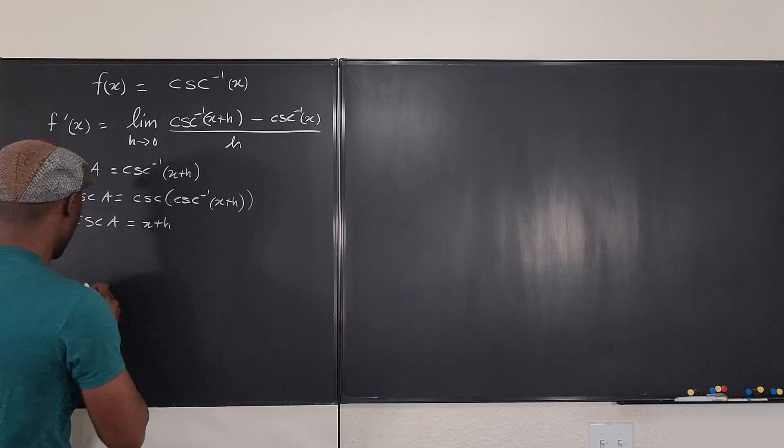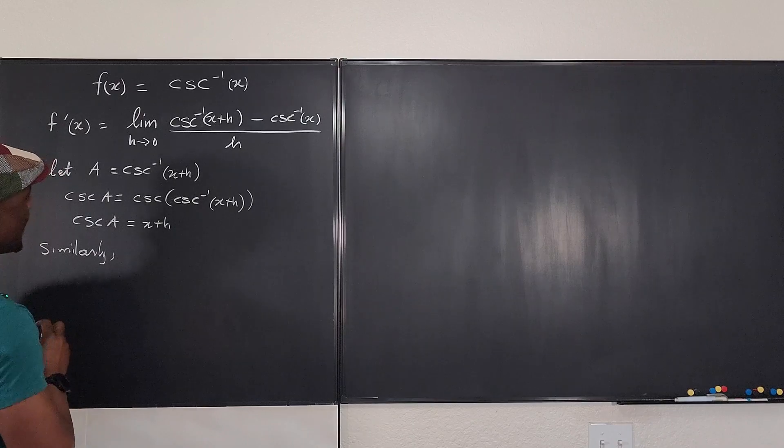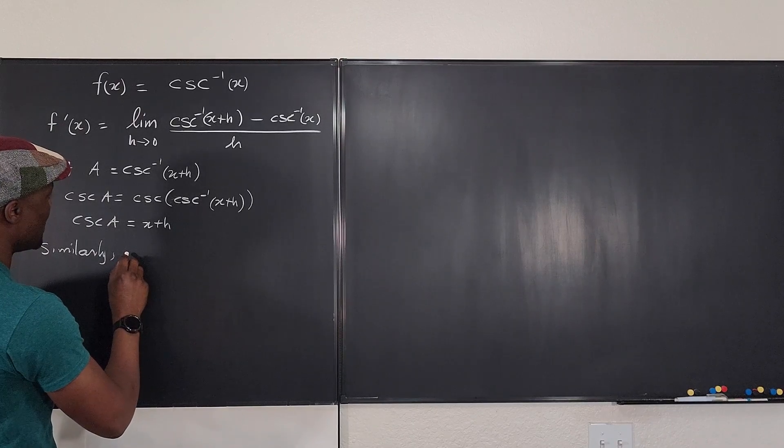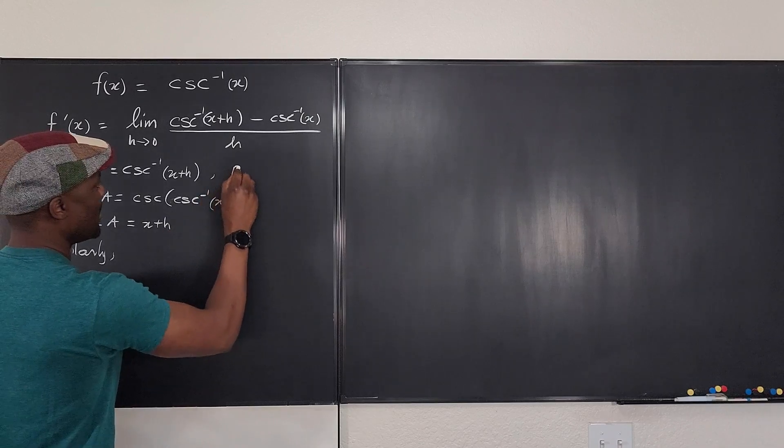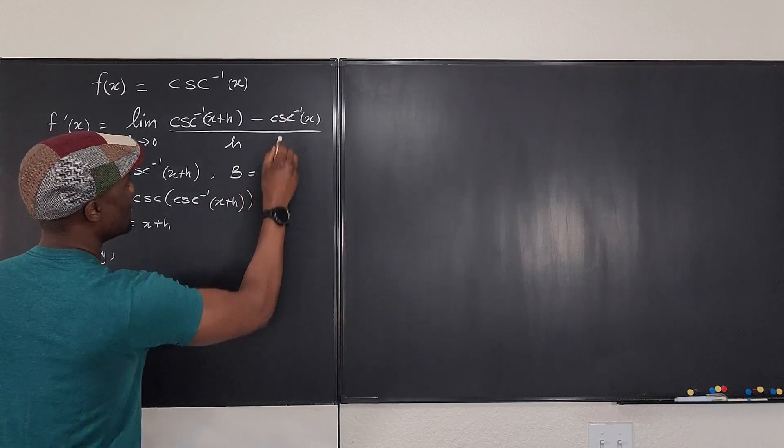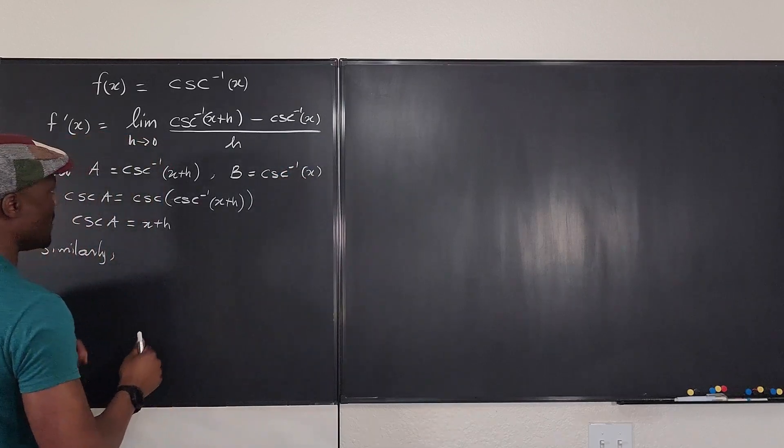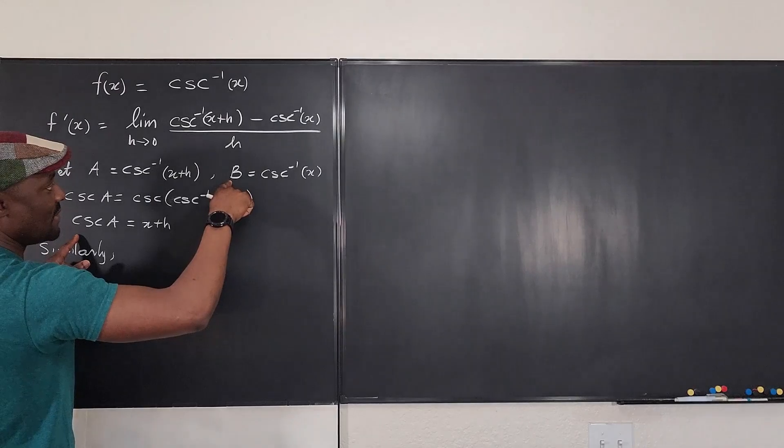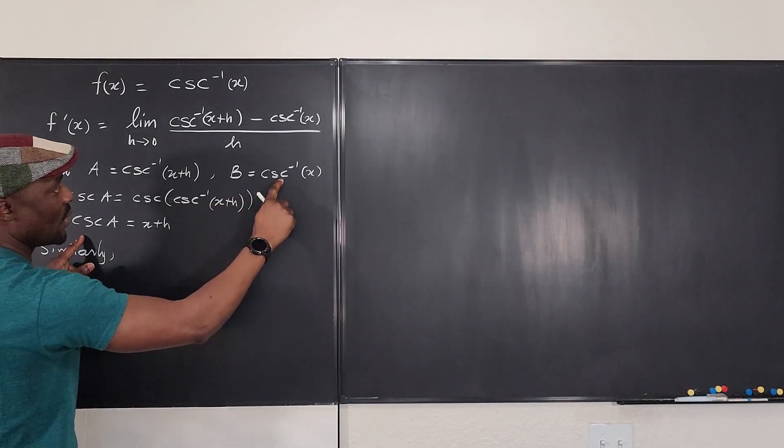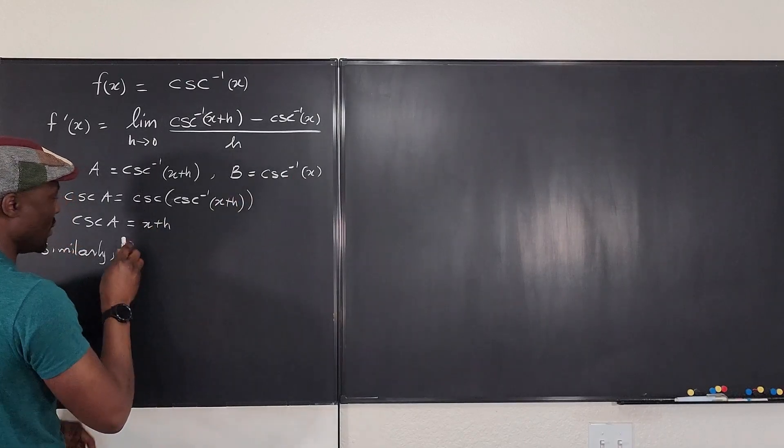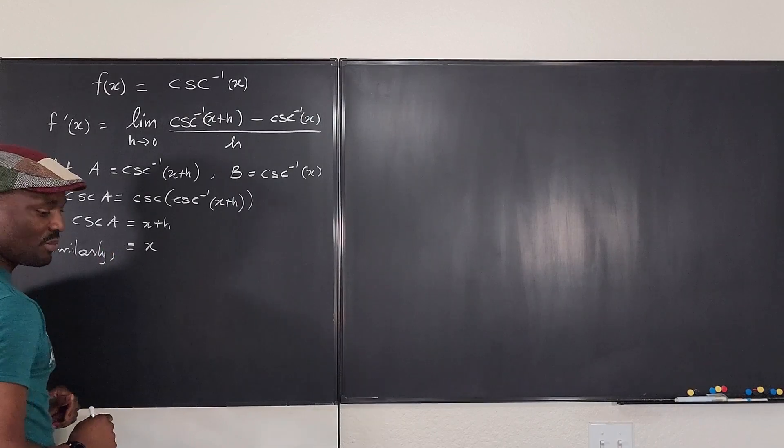So I can say also, or similarly, let b equals cosecant inverse of x. So that if I take the cosecant of this, I'm going to be writing cosecant b here and then undoing this and then just have x. So I can have x here and here I can write cosecant b.